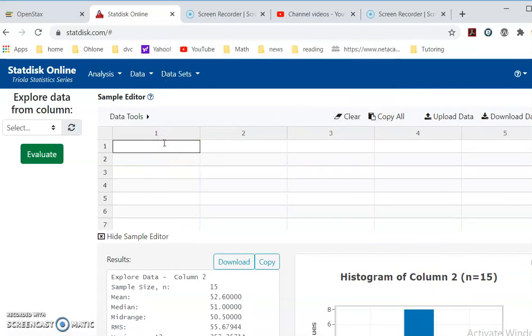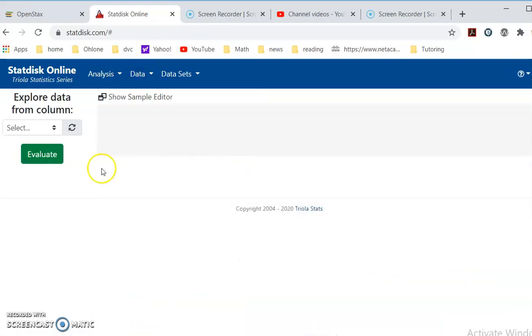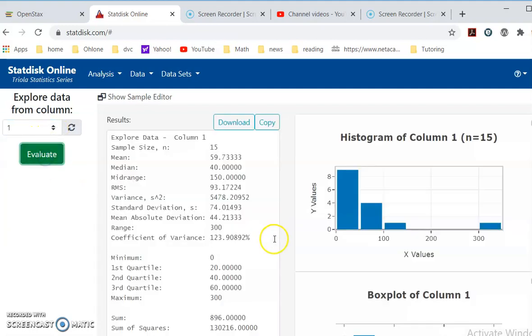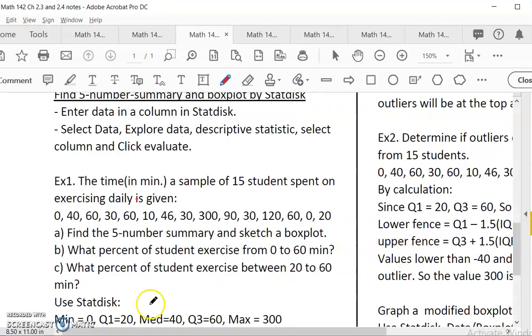So I have it blank. And then I'm going to Ctrl-V, copy my exercise times in column 1. And to graph a box plot, I just do explore data. And it's in column 1. Evaluate. This will show me the five number summary and the box plot. Five number summary is here. Box plot is here.